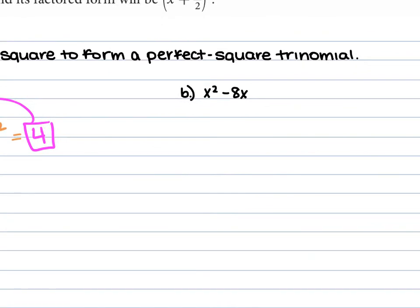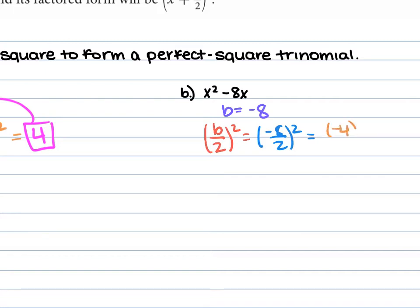For example b, we have x squared minus 8x. Our b is negative 8, so we use b over 2 squared: negative 8 over 2 squared. Negative 8 over 2 is negative 4. We square that and get 16. So this gives us a perfect square trinomial of x squared minus 8x plus 16.